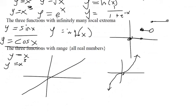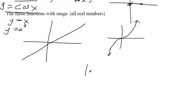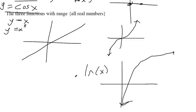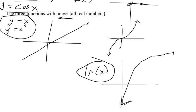The third function with range of all real numbers is the natural log of x. Every possible y value can occur on this graph — negative a billion is reachable as the graph keeps going down, and positive a billion is reachable as it goes up. So those are the three functions with a range of all real numbers: y equals x, y equals x cubed, and y equals natural log of x.